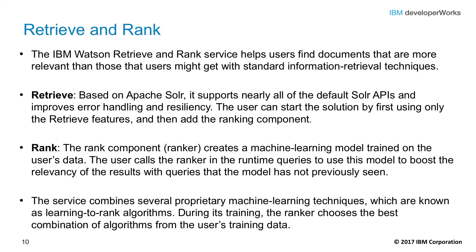The Retrieve and Rank Service provides users with more relevant results compared to traditional searching algorithms by automatically ranking them using machine learning. Built on top of Apache Solr, developers load their data into the service, train a machine learning model, then leverage this model to provide improved search results to their end users. The service combines several machine learning techniques. During the training process, the ranker chooses the best combination of algorithms from the user's training data.